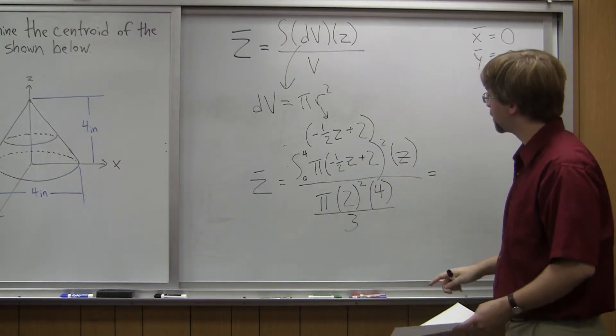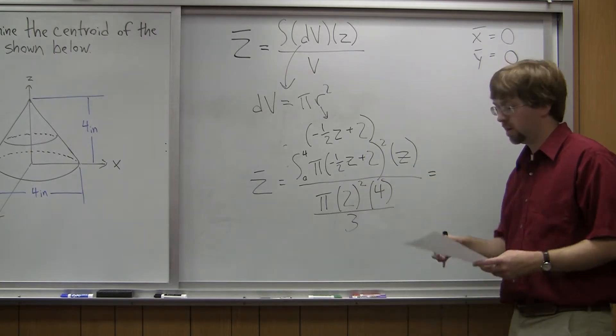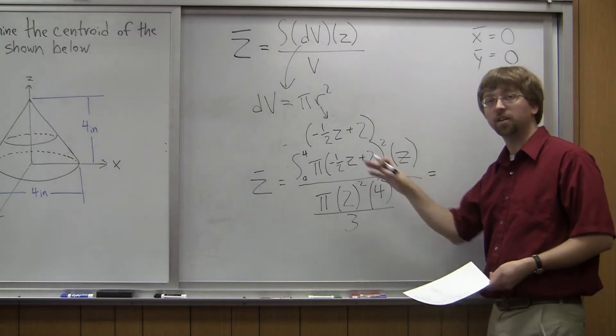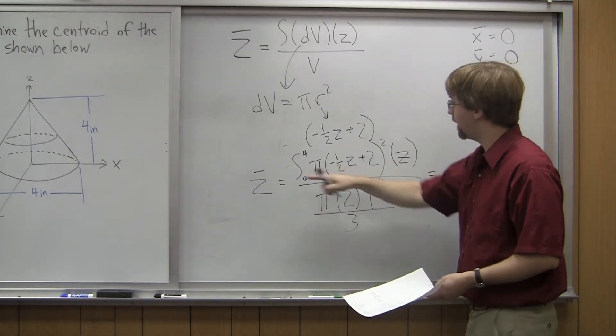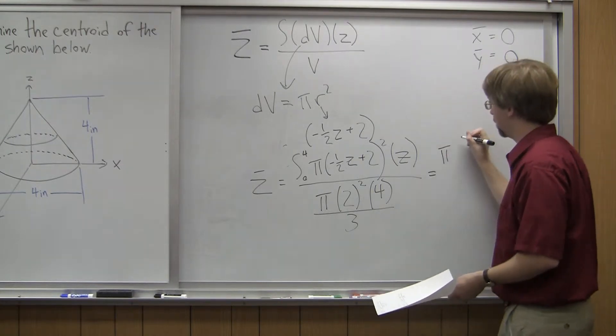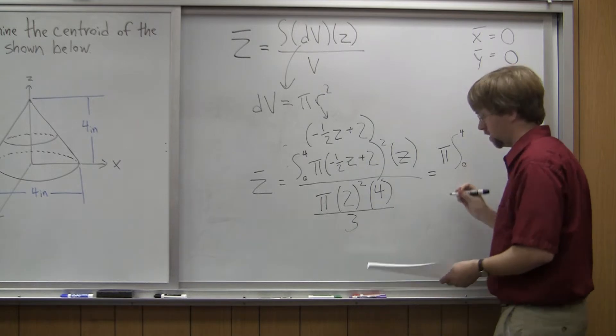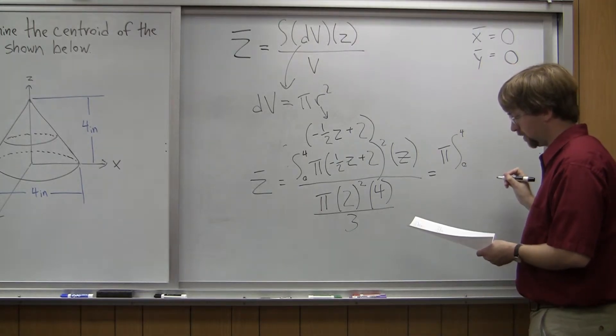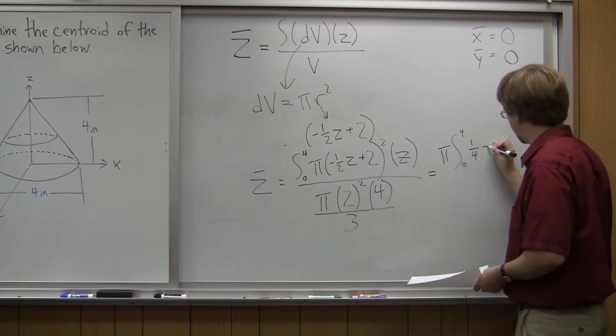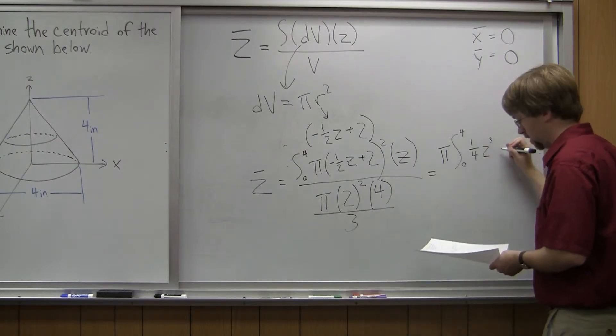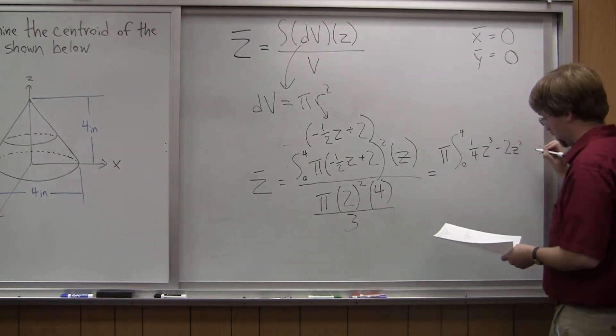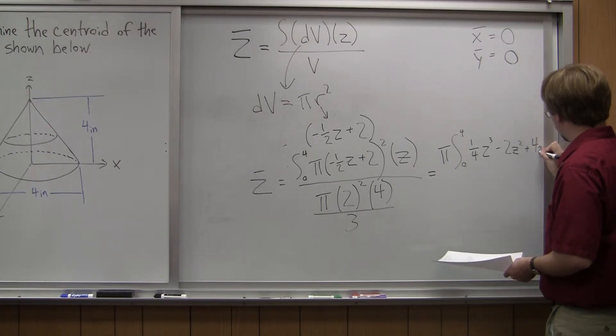All right, so I've got this whole thing. I'm going to simplify the top a little bit. And so rearranging the top, I can rearrange this. I'm going to pull the pi outside because that's a constant. So I'm going to have pi times the integral from zero to four. And this ends up being equal to one-fourth times z cubed minus two times z squared plus four times z.